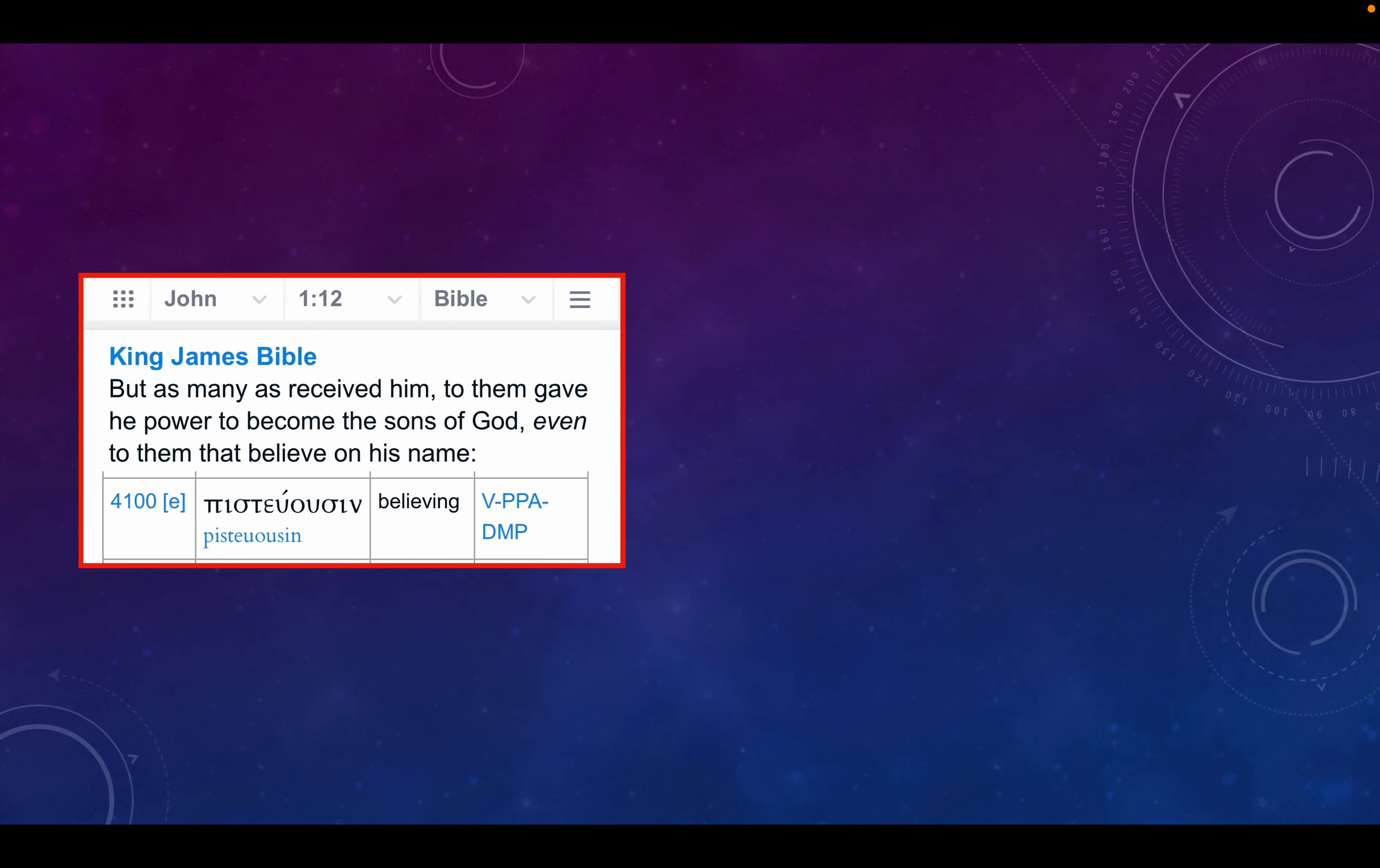We're in John chapter 1 verse 12. But as many as received him, obviously referring to Lord Jesus, the Word who took on flesh, to them gave he power to become the sons of God, even to them that believe on his name. Notice believe in the Koine Greek is pisteusen, believing.